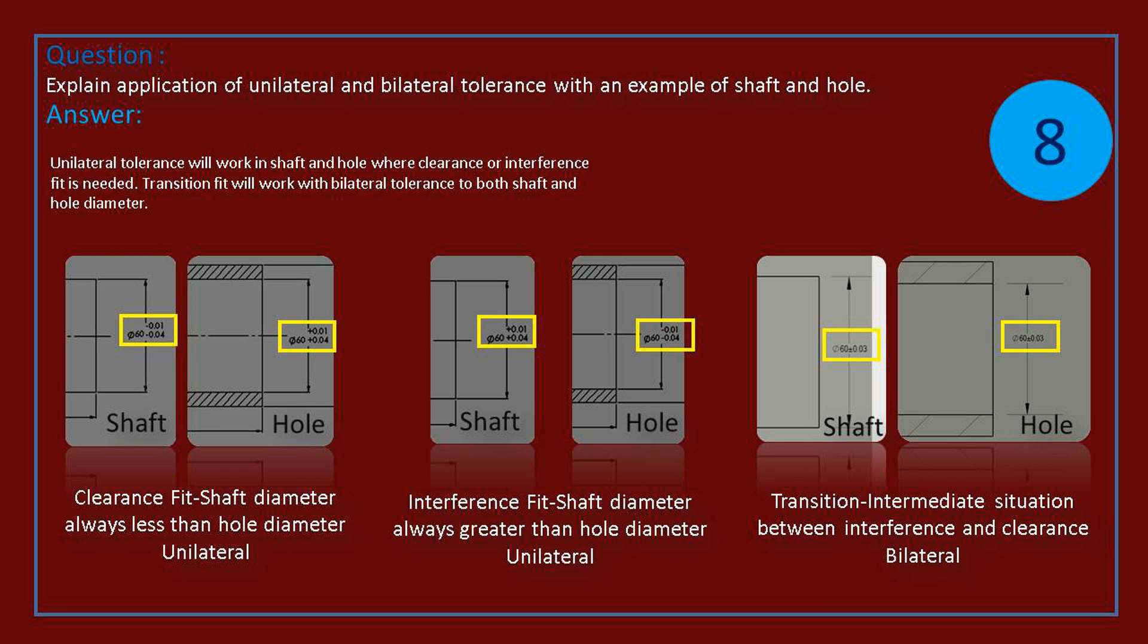Clearance fit is unilateral: shaft diameter always less than hole diameter. Interference fit is unilateral: shaft diameter always greater than hole diameter. Transition fit is bilateral: intermediate situation between interference and clearance.